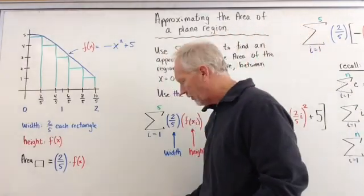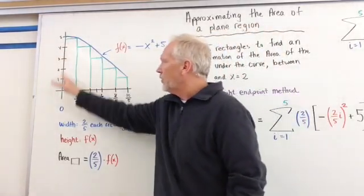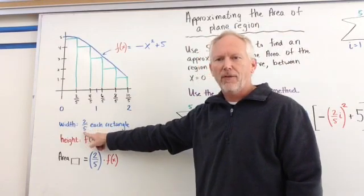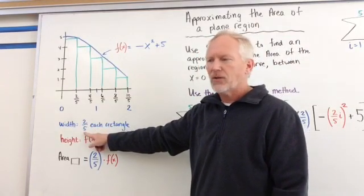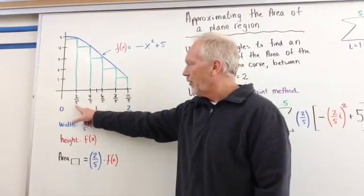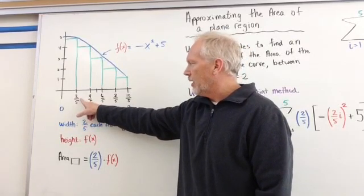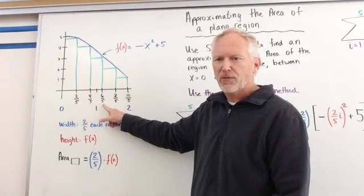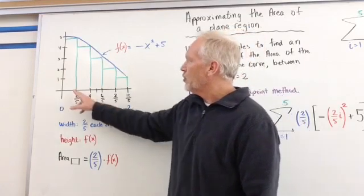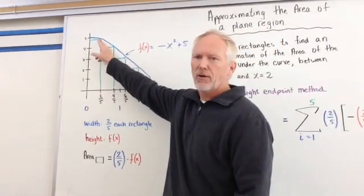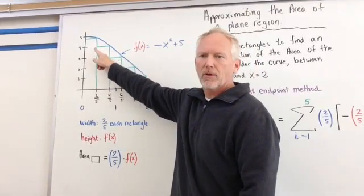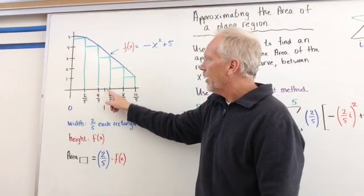I'm going to show you what this looks like on the curve. We have right endpoints. It said it went from 0 to 2, so we take 2 divided by 5, which means the width of all our rectangles will be 2/5. So from 0 to 2, the first rectangle is at 2/5, then 4/5, then 6/5, then 8/5, then 10/5 — and that's where we stop at 2.